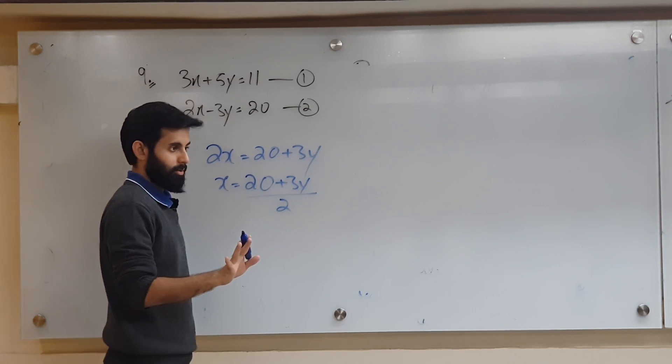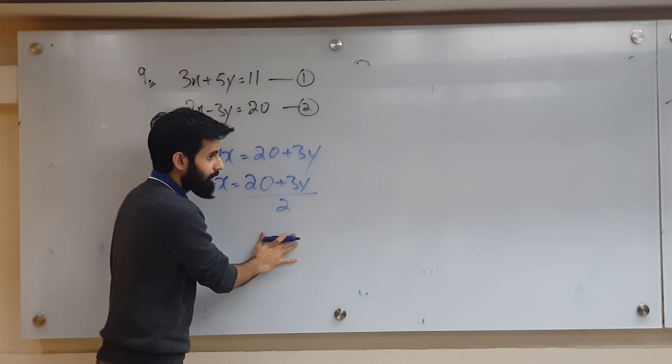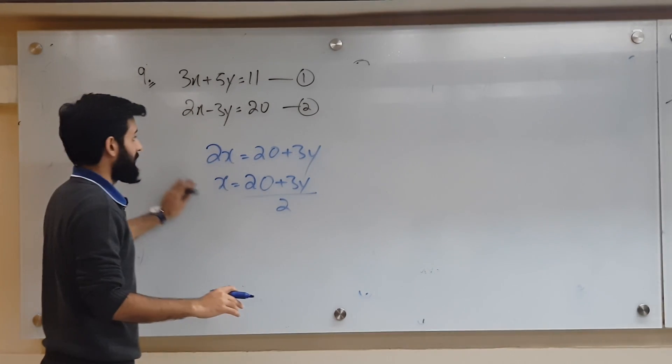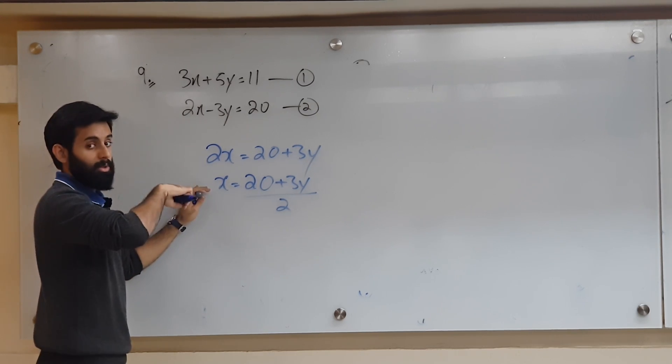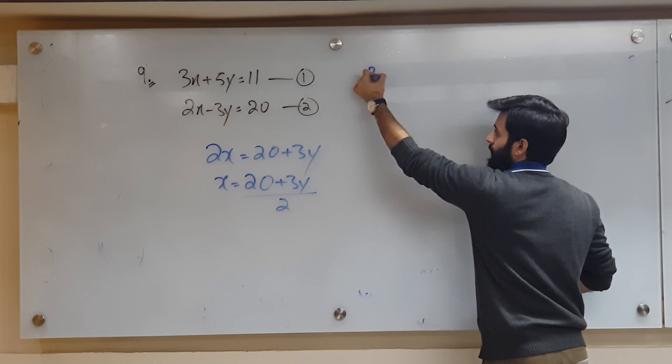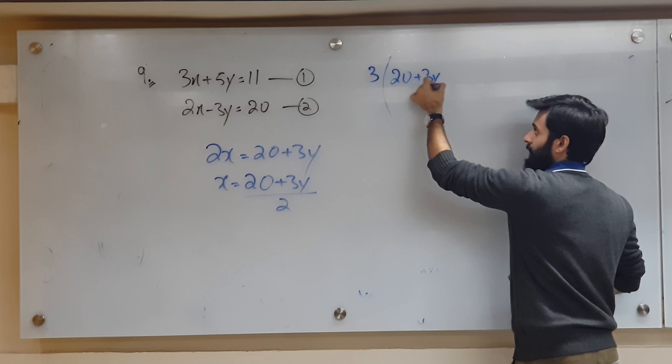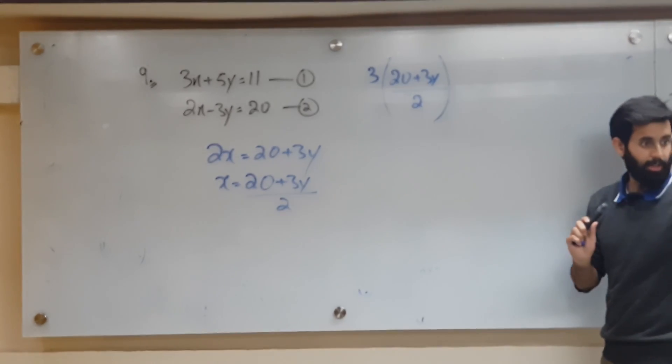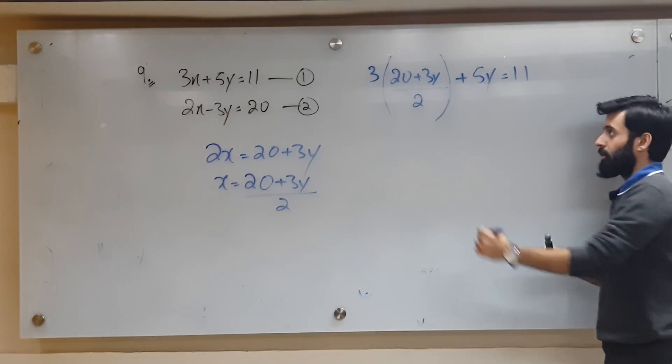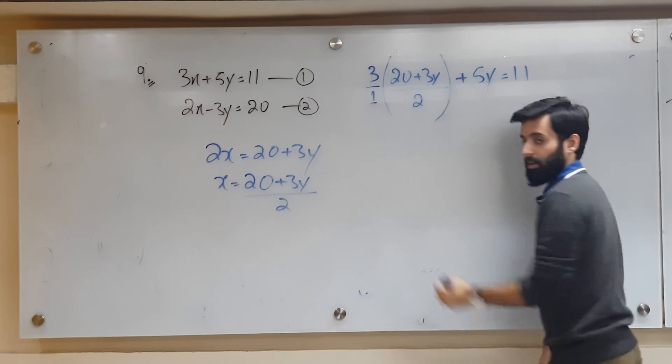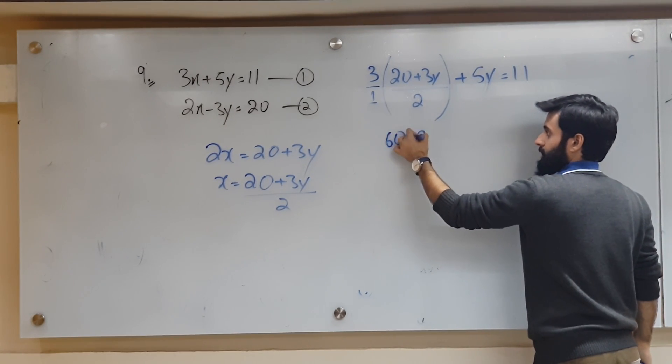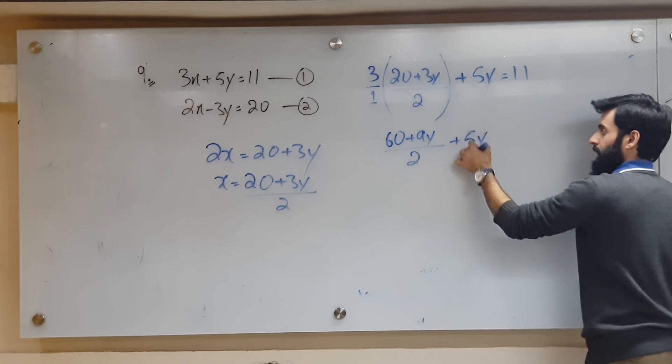Now don't do this: two ones are two, tens are, no no no. Why? Because the whole thing, 2 is divided by the whole thing. 20 plus 3y upon 2 is right. So this is what I have. This has become x subject. This has come from which equation number? Equation number 2. So if I plug it in there, I plug it in equation number 1. 3 means it's 3 upon 1, right? So 3 will be multiplied by the numerator of this fraction and 1 will be multiplied by the denominator of this fraction. 60 plus 9y upon 2, very good, plus 5y equals to 11.